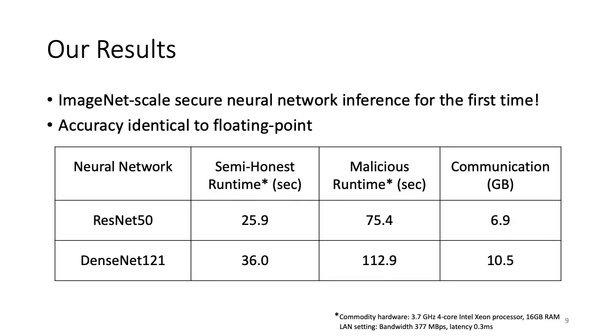To give you a sense of some performance numbers, here we have two neural networks that we consider for our benchmarks, ResNet-50 and DenseNet-121, both of which work over the ImageNet dataset and are widely recognized in the ML community. In the LAN setting with commodity hardware, CryptFlow can run both of these benchmarks in under 40 seconds for semi-honest and 120 seconds for malicious security. This translates to an overhead of less than 3x for malicious security over semi-honest.